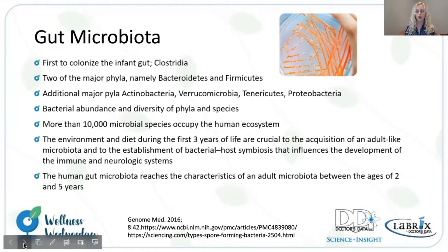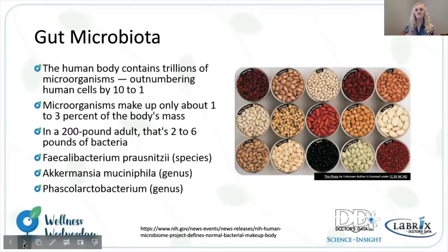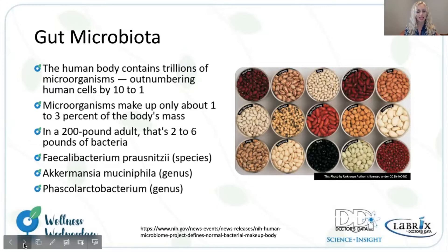Of note, the microbiota is really developed within those first three years of life and is established between the ages of two and five, to basically set the tone for the human microbiota for the rest of your life. The microorganisms outnumber human cells by 10 to 1 and they make up two to six pounds of bacteria within our human colon. Some key bacteria that we will discuss are Faecalibacterium prausnitzii, Akkermansia muciniphila, and Phascolarctobacterium.